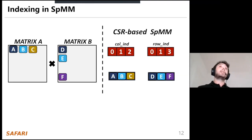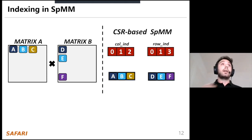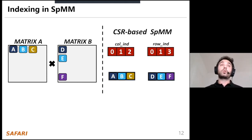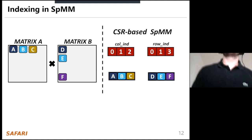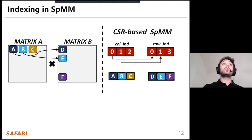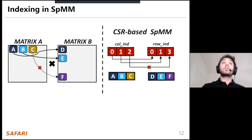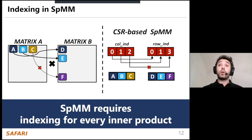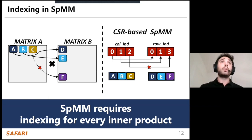In sparse matrix-matrix multiplication, we have two matrices A and B. Elements A and D are in the same column and row, B and E the same, but C and F are not. So we should not multiply C and F in the inner product. We compare the column index of A with the row index of B to find matching pairs. This means SPMM requires indexing for every possible element during the inner product, which dominates computation and is really expensive.